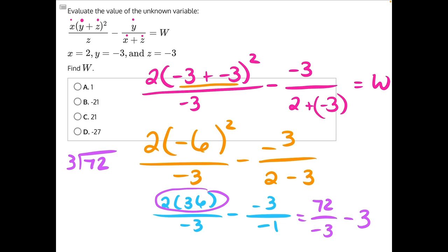3 can go into 7 two times. That would be 6. We subtract. It leaves us with 1. Bring down the 2. 3 goes into 12 four times evenly with no remainder.